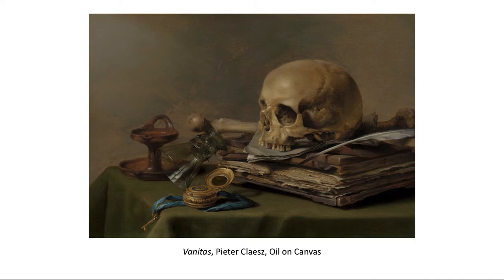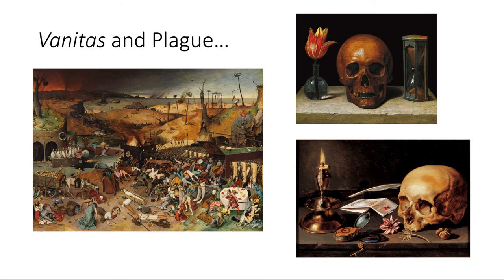Status symbols often appear in Vanitas, like the pocket watch for instance. The overall idea of Vanitas is that all of these possessions are here today and gone tomorrow. Vanitas carries with it allusions to the Black Plague and of desperation, dehumanization, and loss. You can see it here in this Triumph of Death painting that shows the plague sweeping across Europe and how it's reflected in the Vanitas pictures to the right.